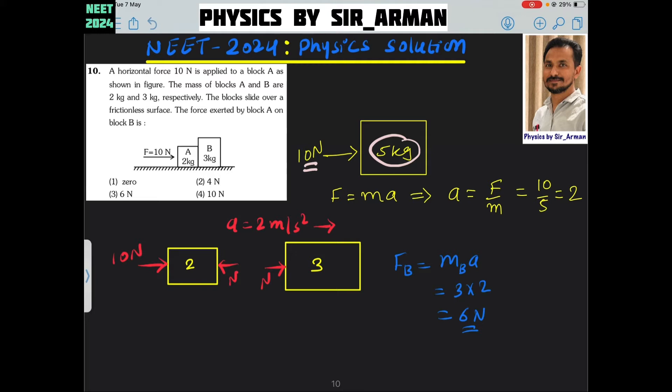What will be the acceleration? It is a equals F by m. The net force is 10 Newton and the combined mass is 5. So they move with a common acceleration of 2 meter per second square.